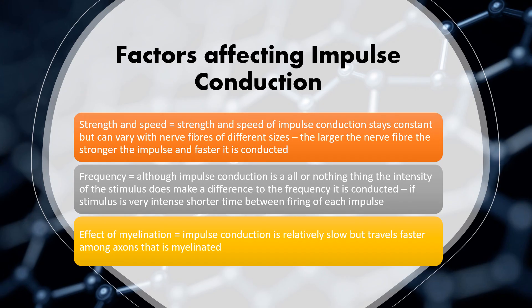There are three factors that affect impulse conduction: strength and speed, frequency, and effects of myelination. Regarding strength and speed, the strength and speed of impulse conduction stay constant but can vary with nerve fibers of different sizes — the larger the nerve fiber, the stronger the impulse and the faster it is conducted. Regarding frequency, although impulse conduction is all-or-nothing, the intensity of the stimulus does affect frequency — if the stimulus is very intense, there is a shorter time between the firing of each impulse. Finally, impulse conduction travels faster along axons that are myelinated.